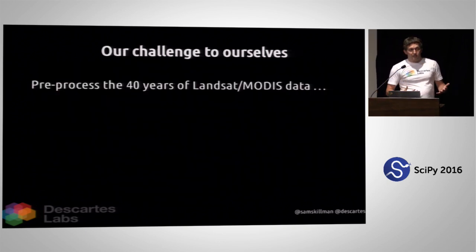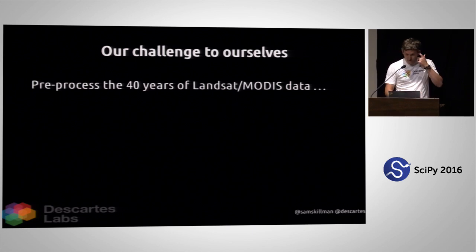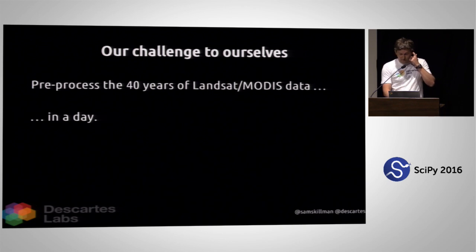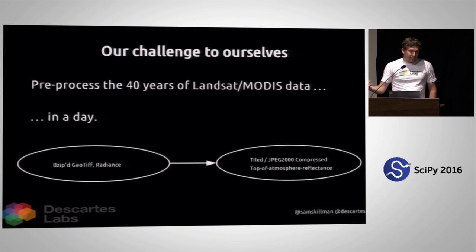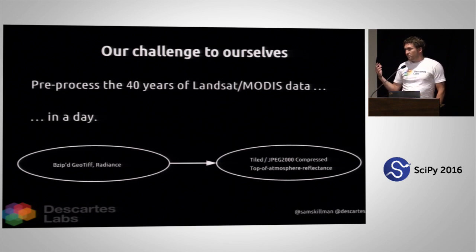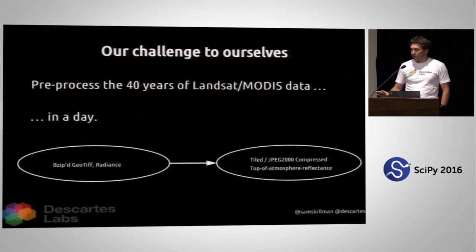Our challenge to ourselves — for no real reason other than to make our lives easier in the future — was to pre-process all 40 years of Landsat and MODIS imagery in a day. That means taking all these bzip geotiffs in all sorts of different units and transforming them into a clean tiled JPEG 2000 compressed dataset in top-of-atmosphere reflectance — nice, clean data.